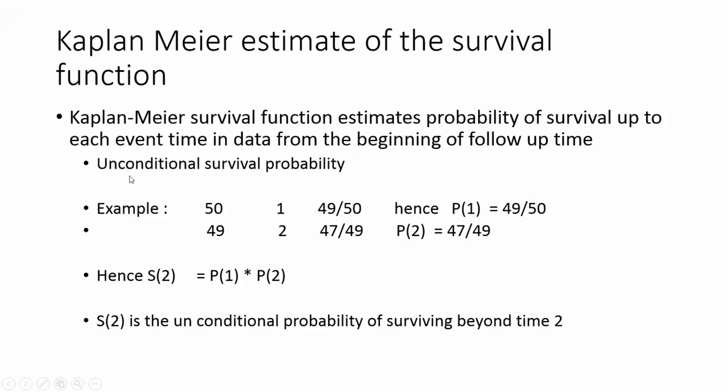To understand it better, let me give you an example. There are 50 patients. At time one, one person died. What's the probability that somebody is going to survive beyond time one? It is 49 by 50. If you know the basic rules of probability, it's the number of surviving by total number of population. Hence, the conditional probability that you are going to survive beyond time one is 49 by 50, denoted as P of 1.